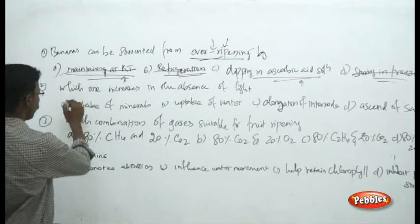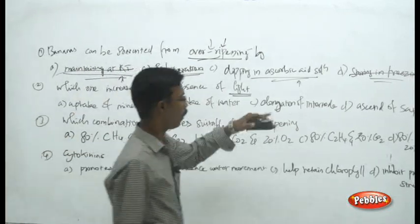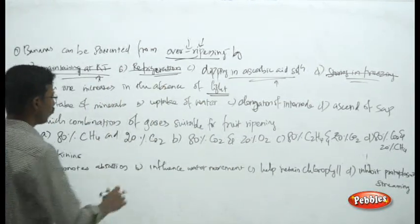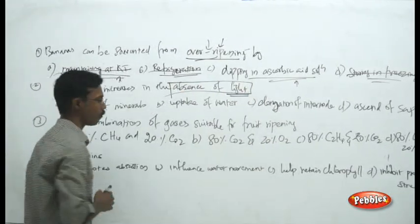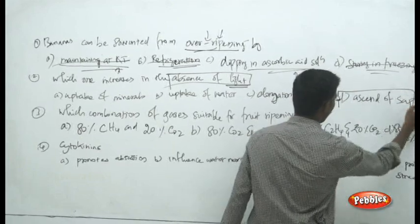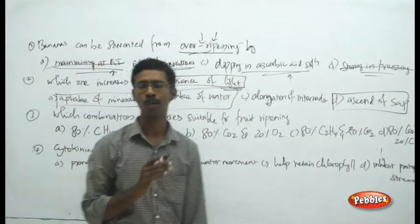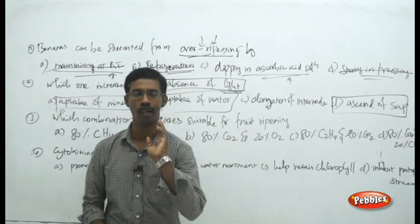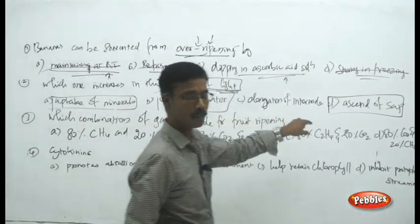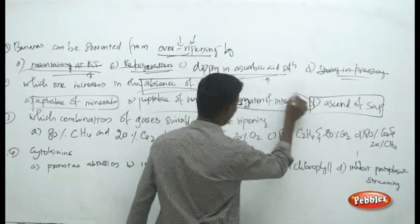Next question: which one increases in the absence of light? The choices are uptake of minerals, uptake of water, elongation of internode, and ascent of sap. Ascent of sap, uptake of water, and uptake of minerals all relate to photosynthesis — they are linked to the presence of light. The remaining choice is elongation of internode.